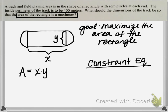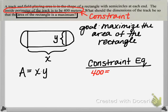Re-reading the problem, the constraint is that the inside perimeter of the track is 400 meters — we're limited to just 400 meters. So we need a constraint equation where something equals 400. We're talking about going around the straight edge, then around one semicircle, then the other straightaway, and then the other semicircle. What I have in red represents the inside perimeter of the track — two straight sides and two curved sides.